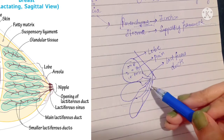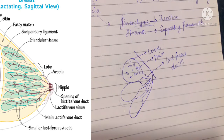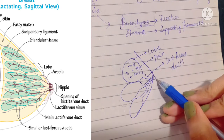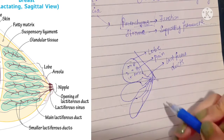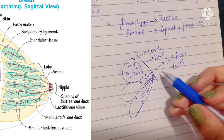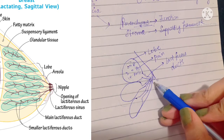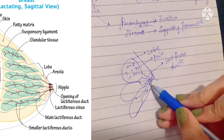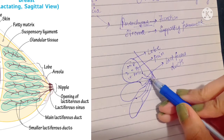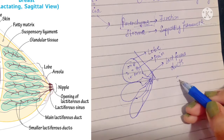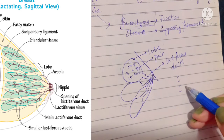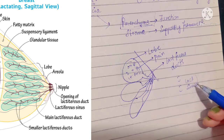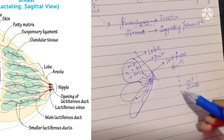The nipple is pierced by 15 to 20 lactiferous ducts because there are 15 to 20 lobes in each breast, and these pierce the nipple where milk is secreted. Just at the ending of the lactiferous ducts, right beneath the areola, these ducts are dilated. These dilations are called the lactiferous sinuses, and they store milk until use is hormonally triggered.